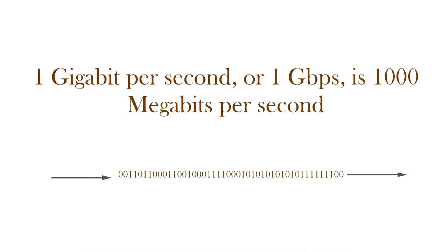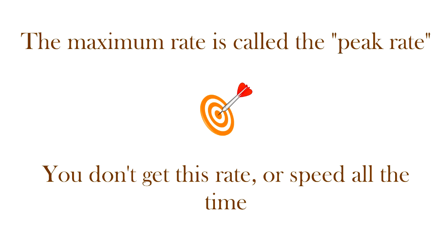Another speed you'll also hear is gigabit per second, and one gigabit per second is 1,000 megabits per second. You may have seen NBN service descriptions in the media or online showing rates like 100 megabits per second, 50 megabits per second, or 12 megabits per second. These rates refer to the maximum rate you get, sometimes called the peak rate. The important thing to understand is that you don't get that rate all the time — that's the maximum you can get.